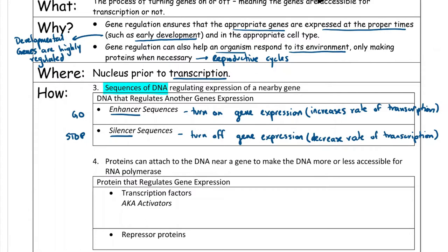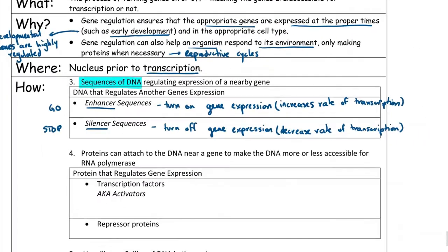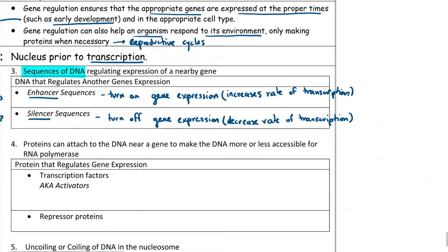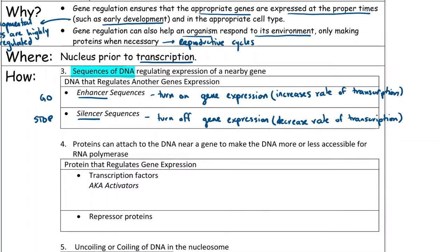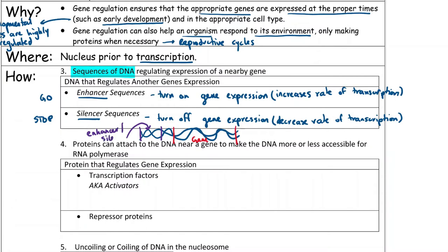In terms of positioning, if you have a DNA double strand and the gene is a specific portion, the enhancer or silencer would be found just before the actual gene begins — located upstream on the DNA strand.